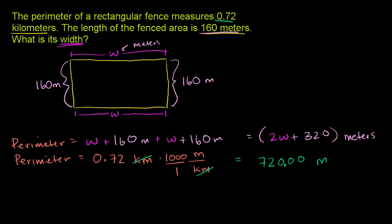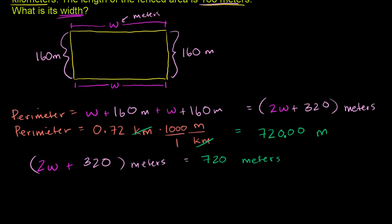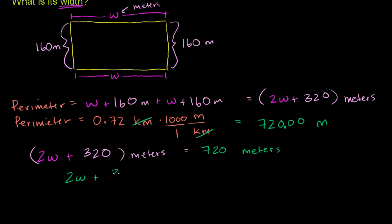So if you take two times the width in meters and add that to the length and the combined lengths, it's 160 and 160, that's 320, and all of this is in meters, that is going to be equal to the total perimeter, which is 720 meters. Now that we have the units right, we can solve for w, and w will tell us this width in meters. So 2w plus 320 is equal to 720.